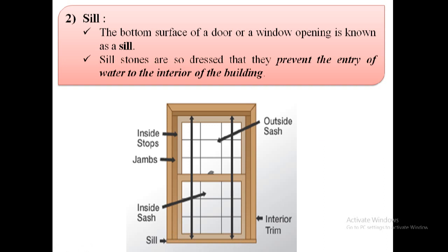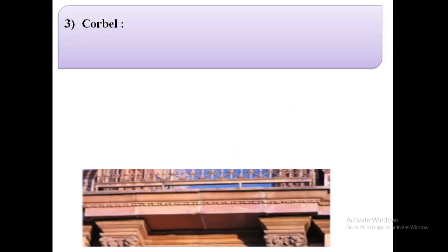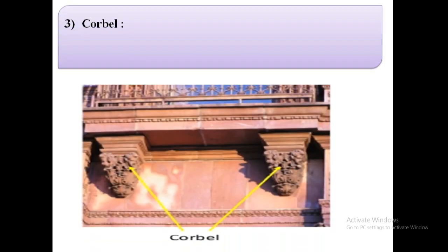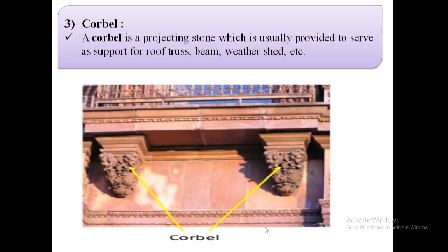Sill stones are so dressed that they prevent the entry of water to the interior of the building. The next term is corbel. A corbel is a projecting stone, as shown in the image, which is usually provided to serve as support for a roof truss, beam, weather shed, etc.